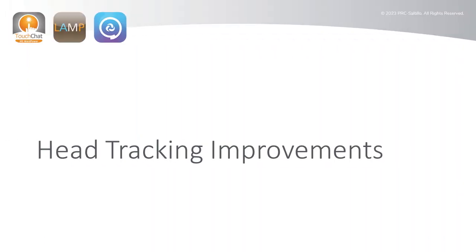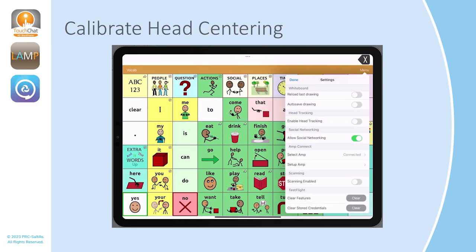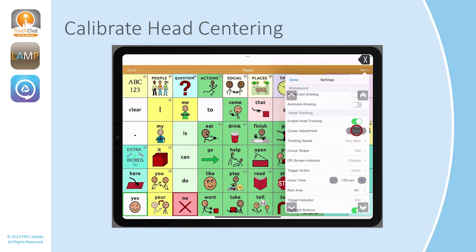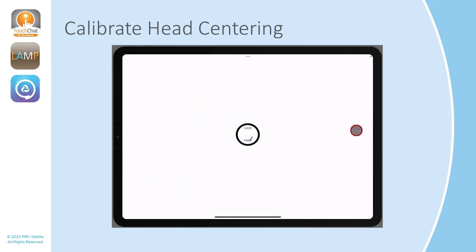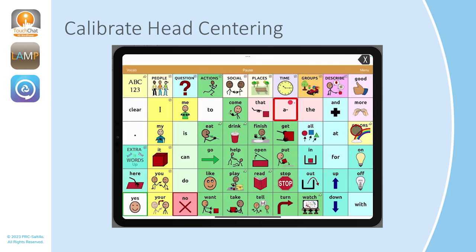PRC Saltillo has made some improvements to the Head Tracking feature in Touch Chat, Lamp Words for Life, and Dialog AAC with Update 2.46. You will be prompted to calibrate your head centering upon opening Head Tracking Settings for the first time. Place the device in the correct position for your AAC communicator and tap on Center. Follow the directions on the screen and your head tracking is calibrated for your user.